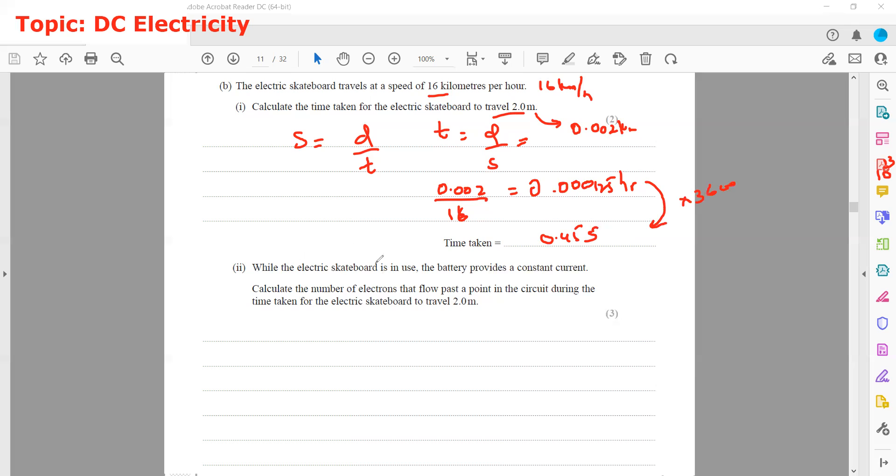Then, while the electric skateboard is in use, the battery provides a constant current. Calculate the number of electrons that flow past a point in the circuit during the time for which the electric skateboard travels 2 meters. So we have the time from the previous part, and we already have the charge.